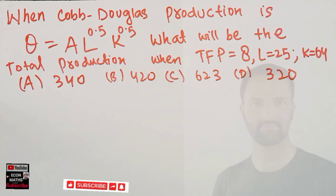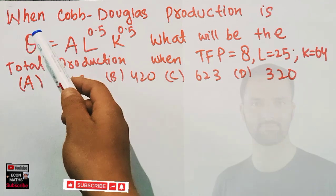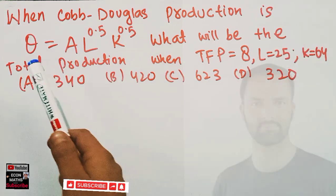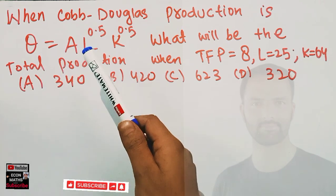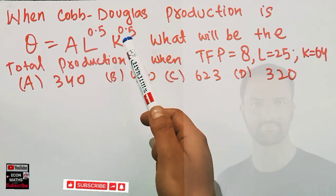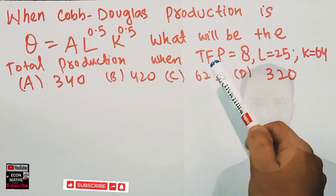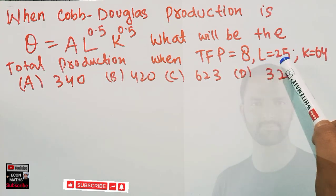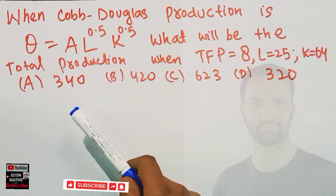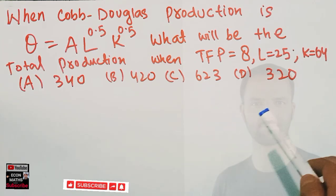In this video, we will solve a question from the JNU Economics 2021 paper. The question is: when the Cobb-Douglas production function is given as Q = A × L^0.5 × K^0.5, what will be the total production when total factor productivity is 8, labor is 25, and capital is 64? The options are 340, 420, 623, or 320.